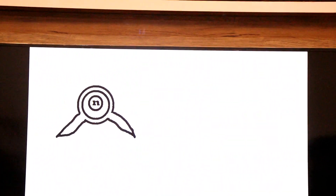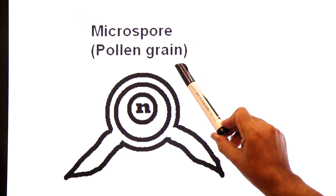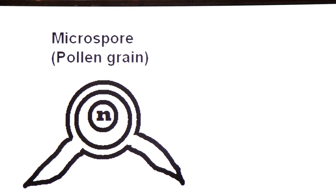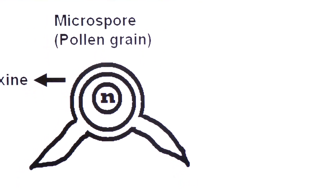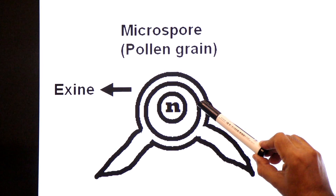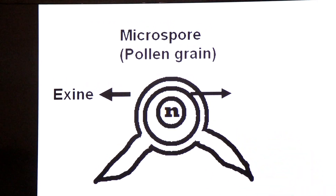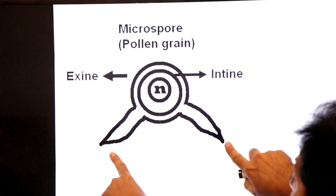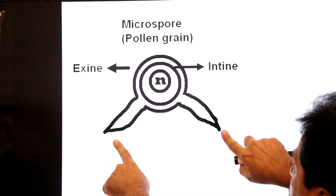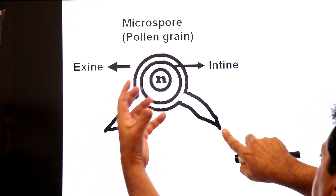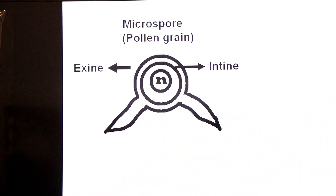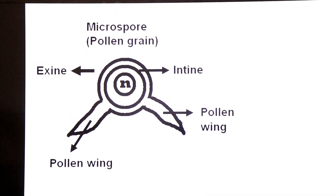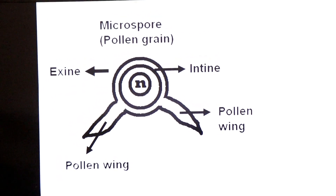This diagram shows the immature pollen grain (microspore). It has an outer wall known as exine and an inner wall known as intine. The exine produces two wing-like projections called pollen wings, which help in dispersal by wind and aid in pollination.